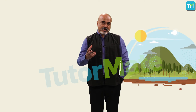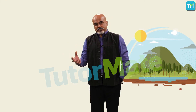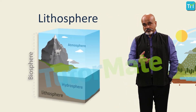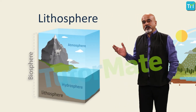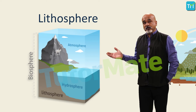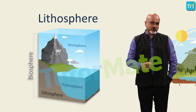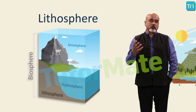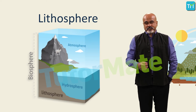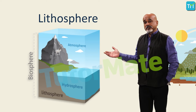Let's start with land. The outer crust of the earth is called the lithosphere. The lithosphere includes the crust and the uppermost mantle, which form the hard and rigid outer layers of the earth. Basically, it refers to the earth's hard outer surface, or land.